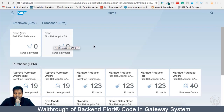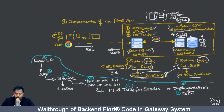Our objective is to understand the Fiori launchpad and understand what services are responsible for getting the data, and to explore those services. We will follow a simple procedure: first, we are inside the Fiori launchpad, then we will open up any application we want to explore, go into the service section, and find out what service that particular application is getting the data from.